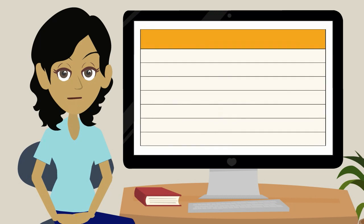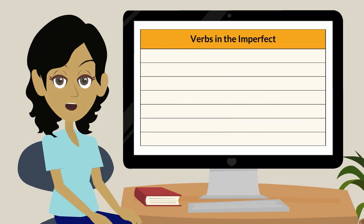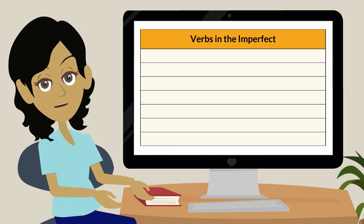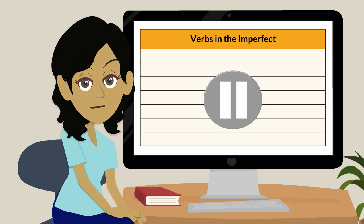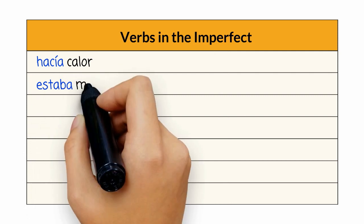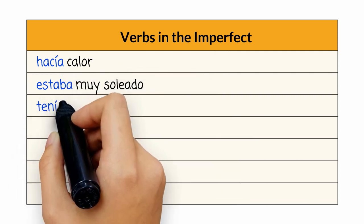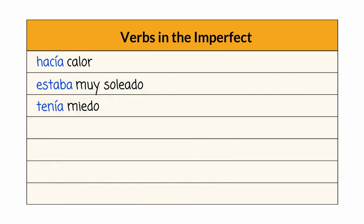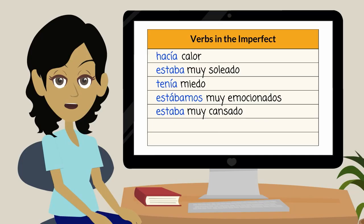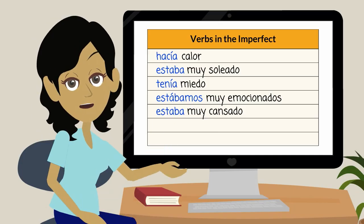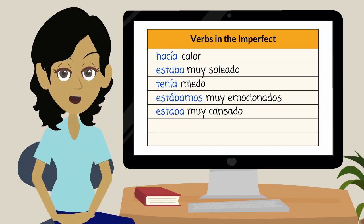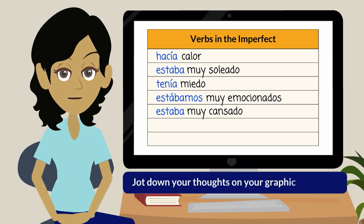Now let's check the verbs in the imperfect tense together. This time, we will record a phrase so we can see how the verb was used to describe the past. You may pause the video at any time. Hacía calor y estaba muy soleado todos los días. Tenía miedo de ver un tiburón. Estábamos muy emocionados. Después estaba muy cansado. What do you notice about the kind of information the verbs in the imperfect are communicating? Can you notice any patterns? Jot down your thoughts on your graphic organizer.